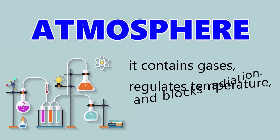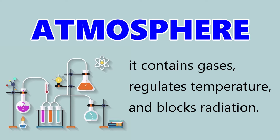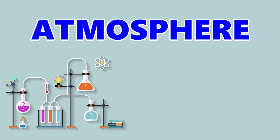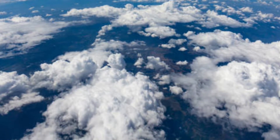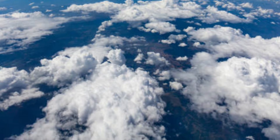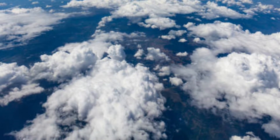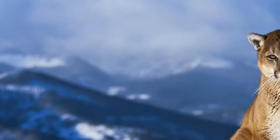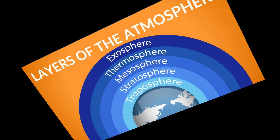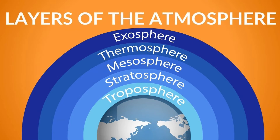The atmosphere contains gases, regulates the temperature, and blocks radiation. The atmosphere is the gaseous part of the earth composed of several trace gases necessary to support the existence of all living components such as plants and animals. The atmosphere is divided into layers according to differences in the pattern of temperature as one goes to higher altitude.